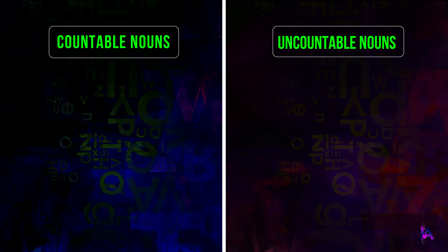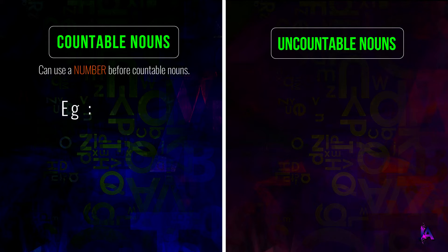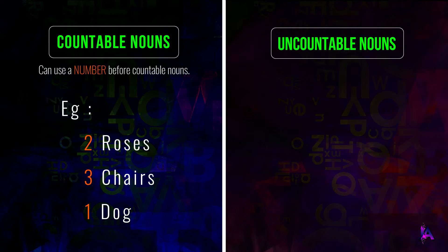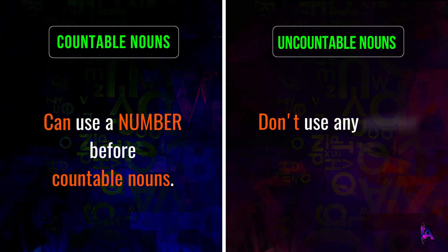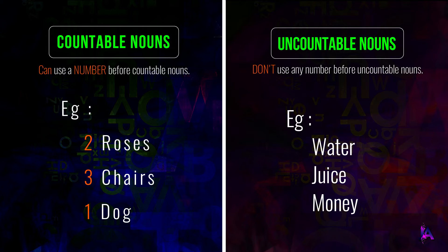Second, we can use a number before countable nouns — two roses, three chairs, one dog. But we don't use any number before uncountable nouns. Two waters or three juices is not used.